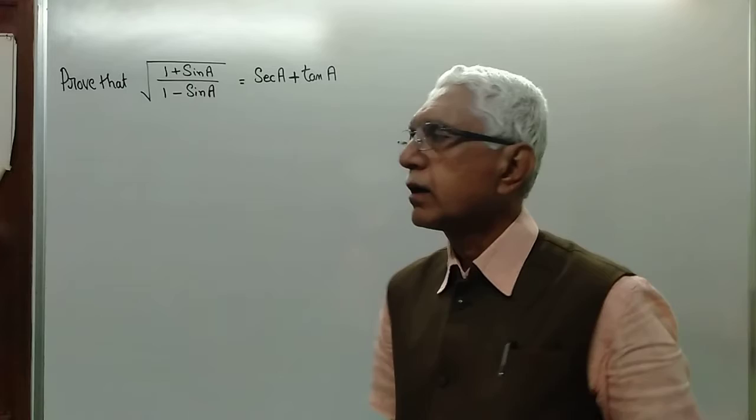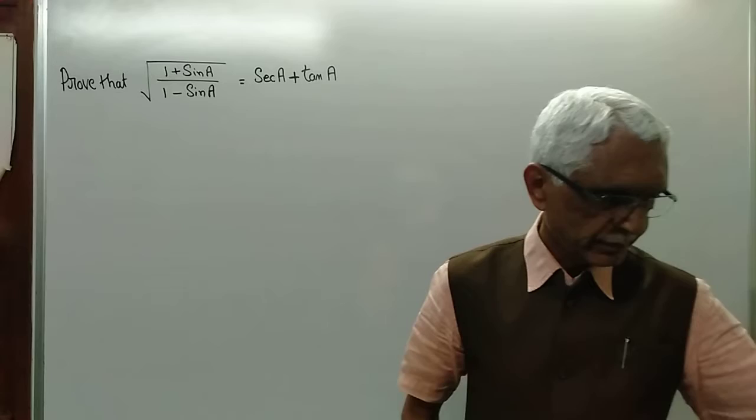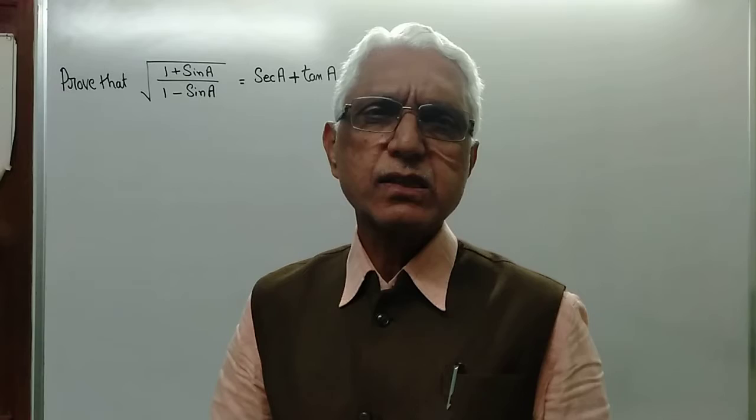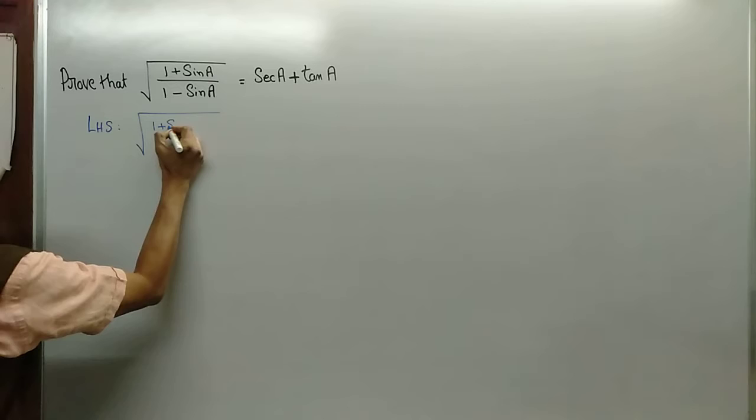We are required to prove that square root of (1 plus sin a) divided by (1 minus sin a) is equal to secant a plus tan a. As I have told you, most of the cases we start with the left hand side. We should do that here also. You have the left hand side: square root of 1 plus sin a divided by 1 minus sin a.